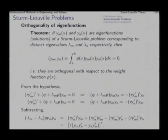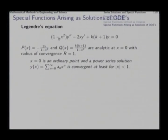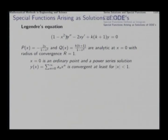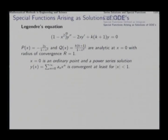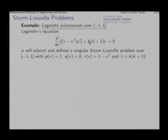As an example of this orthogonality, let us take the Legendre equation from the previous lecture. This is already in self-adjoint form, because the derivative of the coefficient of y double prime, which is (1 − x²), is −2x, exactly the coefficient of y prime. So these two terms together can be written as the derivative of (1 − x²) y prime. In our context, k(k+1) sits in the place of λ, the eigenvalue.